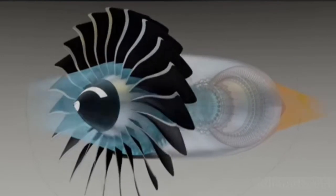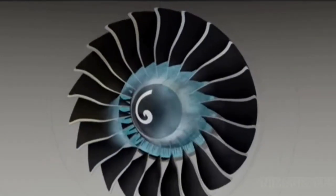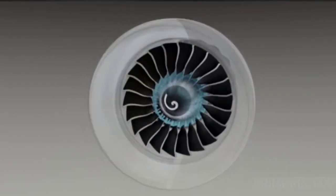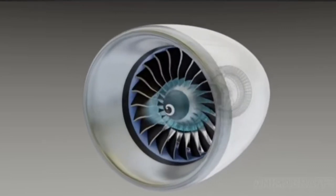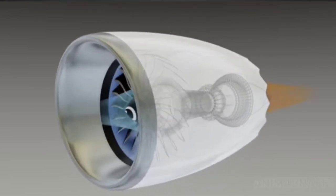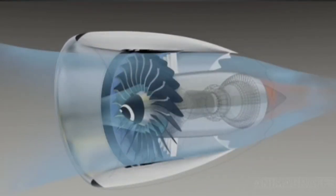The resulting power turns a specially designed fan. Again, the fan can be thought of as a high-tech propeller inside of a duct. Air that does not enter the core is called bypass air.